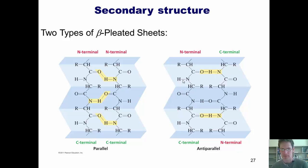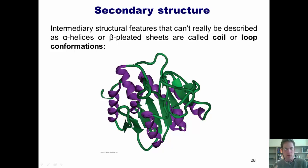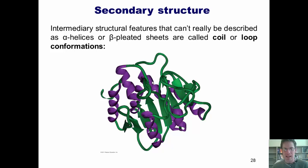I won't require you to know all the rigid details of secondary structure — I just want to introduce them. Now, looking at this protein structure, these little coils represent individual amino acids in a sequence hydrogen bonding in such a way that they coil. These arrows represent parallel or anti-parallel beta-pleated sheets — regions of amino acids forming complementary hydrogen bonds. And these tubes wrapped around in various ways are called coil or loop conformations: any intermediary region between an alpha helix or beta-pleated sheet that doesn't fit into those two categories.